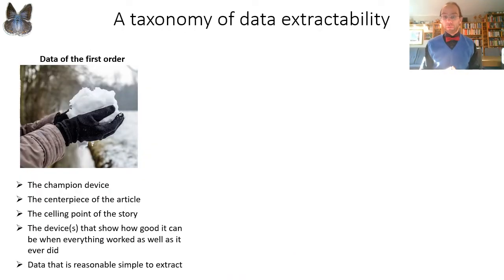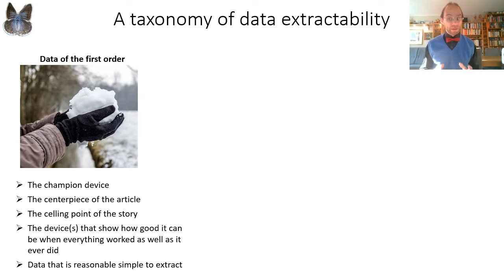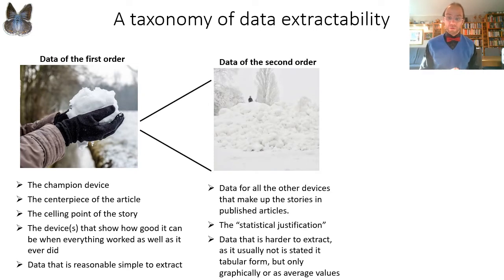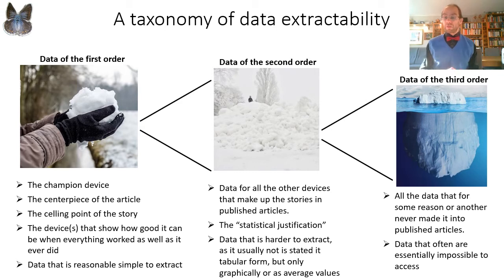Unfortunately, every device is not as well described as we would like, and we can talk about the taxonomy of data extractability. Most importantly, there is what we call data of the first order — data for champion devices, which is almost always available. It's the data people like to brag about and tends to be the centerpiece of the story. Then we have data of the second order: data for all other devices in the papers that provide the statistical justification for the story. This is usually harder to extract, as it may not be in table form but only found in scatter plots or average values. Finally, there is data of the third order — data for all devices that, for some reason, didn't make it into published papers. Historically, data for those devices is very hard to find and essentially lost forever, which is something we hope to change in the future.